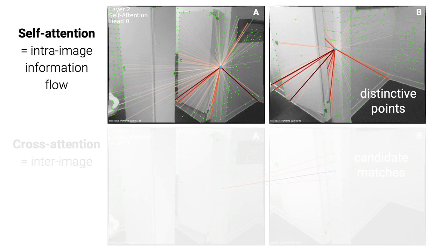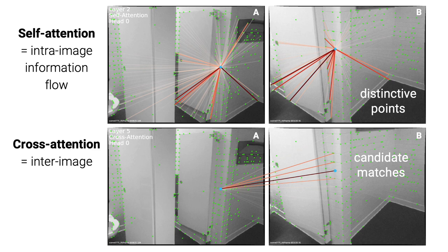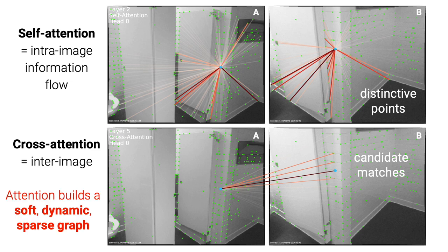SuperGlue is based on two types of attention. Self-attention aggregates information from keypoints in the same image; it can, for example, attend to distinctive keypoints to disambiguate self-similarities. Cross-attention enables inter-image communication, attending, for example, to candidate matches. Together, they define a soft graph that is data-dependent, sparse, and interpretable.